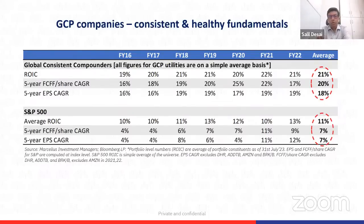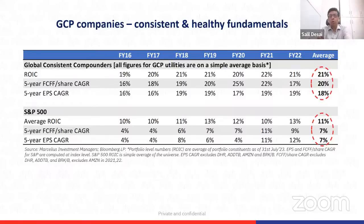A related question: when companies are doing so many acquisitions, how do you analyze these investments? It's impossible to know which of those 40,000 companies in Constellation's database could be a good acquisition. Whenever an announcement is made, how do you factor that into your assessment of the future?